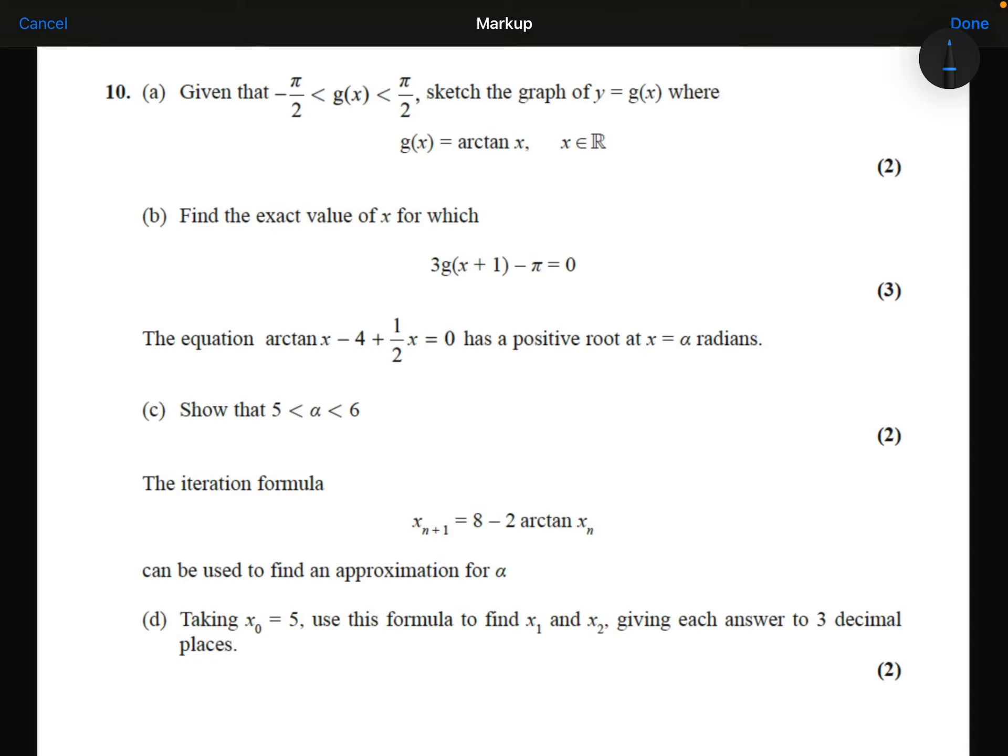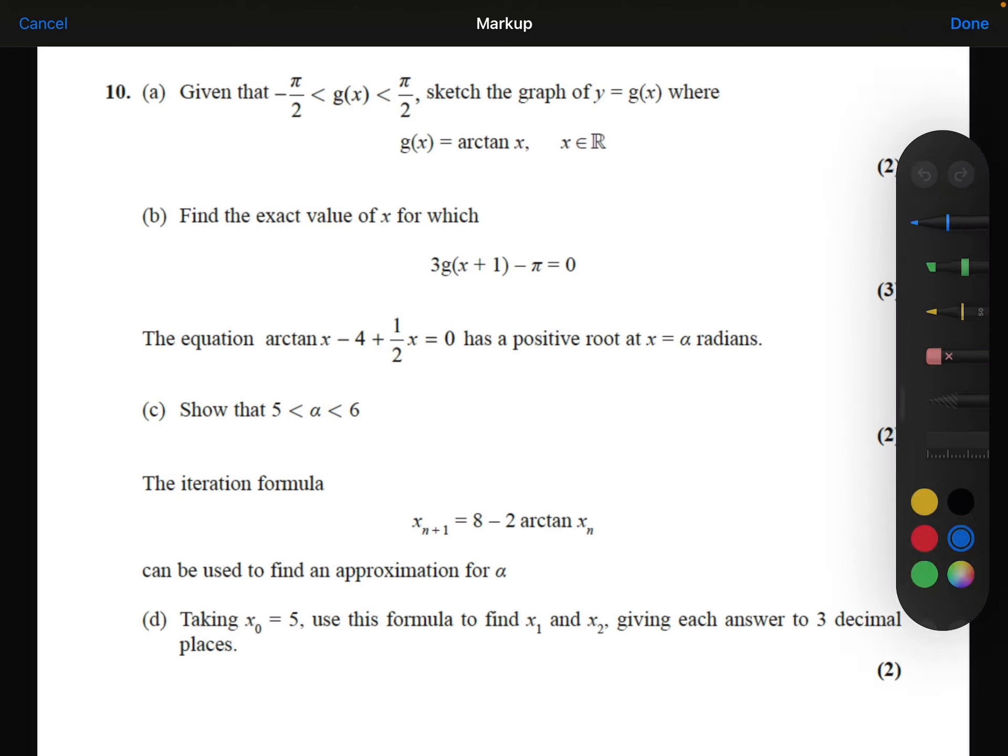Part A, given that g of x is between minus pi over 2 and pi over 2, sketch the graph of g of x where it's equal to arctan x. Arctan x is the inverse function of tan x, which I know how to draw easily.